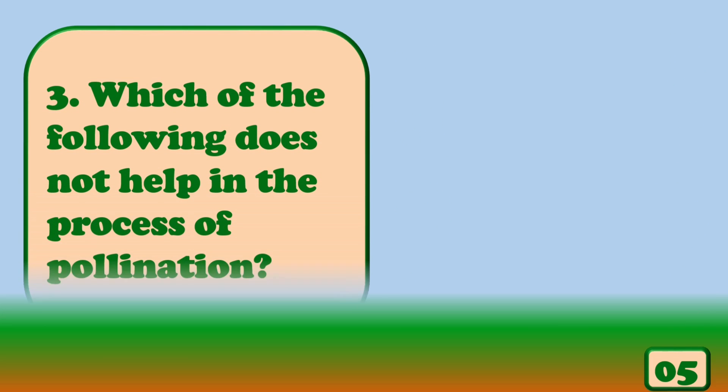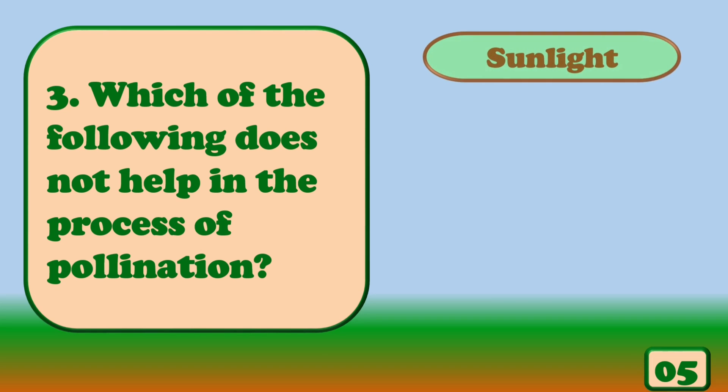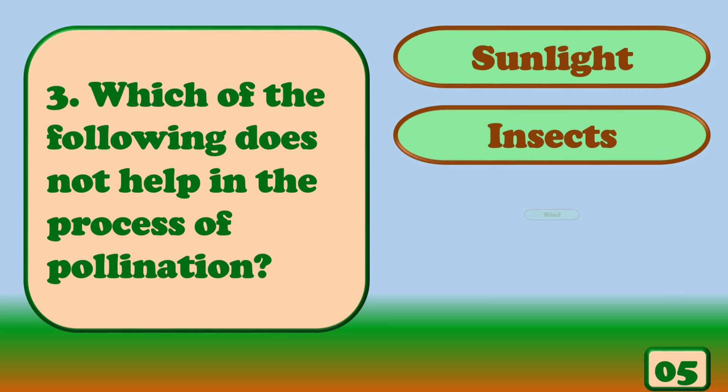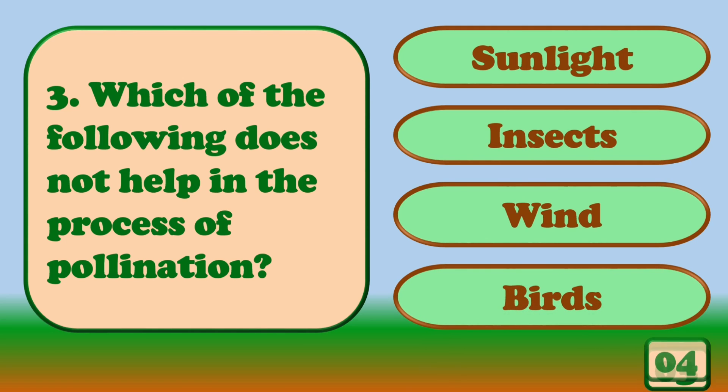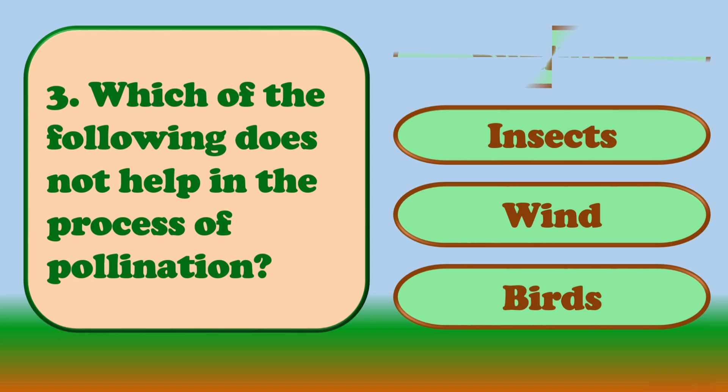Which of the following does not help in the process of pollination? The correct answer is sunlight.